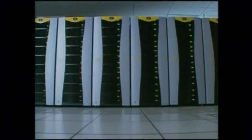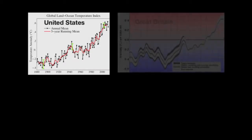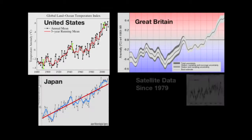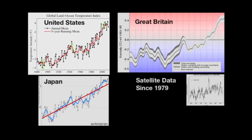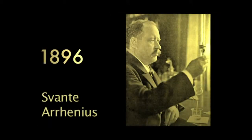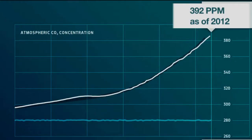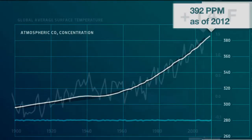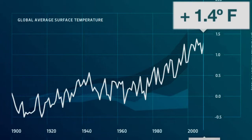Scientific knowledge builds over time as new observations and data become available. Confidence in our understanding grows when independent global analysis by scientific groups in different countries show the same warming pattern, or if other explanations can be ruled out. Scientists have understood for more than a century that emissions from the burning of fossil fuels should lead to an increase in the Earth's average surface temperature. Decades of observations and research have confirmed and extended this understanding.